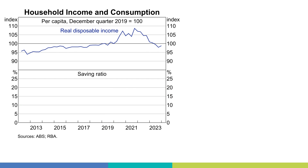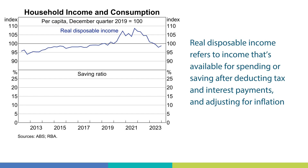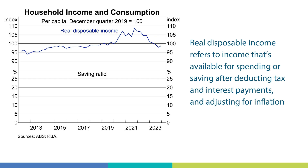Let's dig deeper into the weakness in the household sector. This graph shows real household disposable income per person. Real disposable income is a measure of people's income available for them to spend or save after deducting tax and interest payments and adjusting for inflation. It's shown as an index, which helps us compare the current level with what it was in the December quarter of 2019. The blue line shows that real disposable incomes have declined sharply over the past 18 months, mainly due to high inflation, higher interest rates, and tax payments.